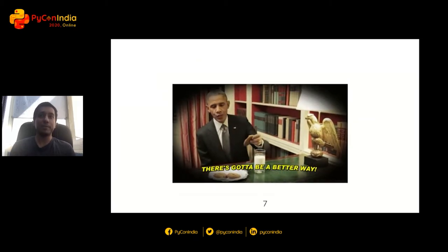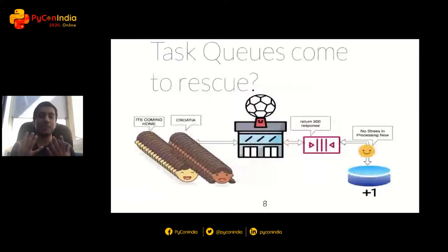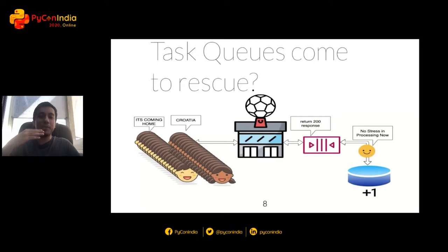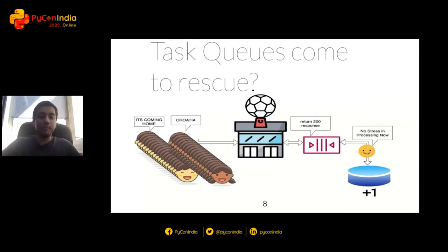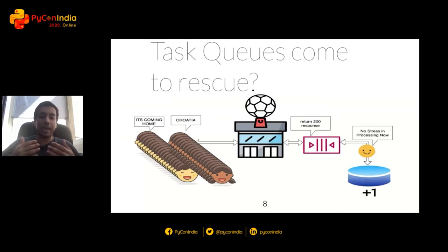There's got to be a better way — and there is. Task queues come to the rescue. A task queue is a queue of tasks — that's exactly what it is. In the new architecture, whenever we get requests from the web server, instead of going directly to the database, it puts tasks into the task queue and returns a 200 response. The database can then consume requests from the task queue at its own pace. We moved from a real-time approach to an eventually consistent approach, which is fine since I only needed to see the count at the end of the day.